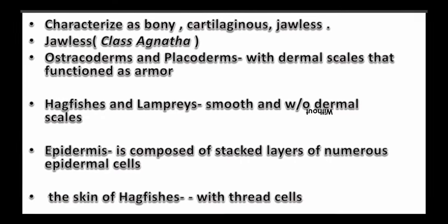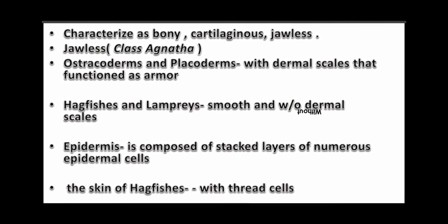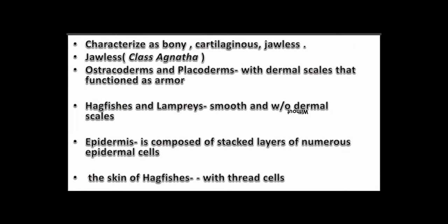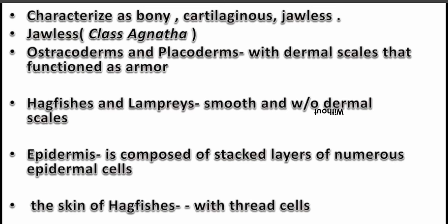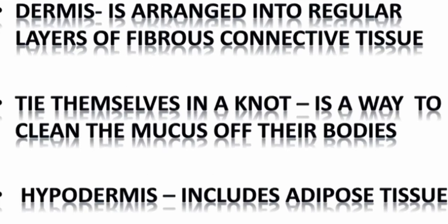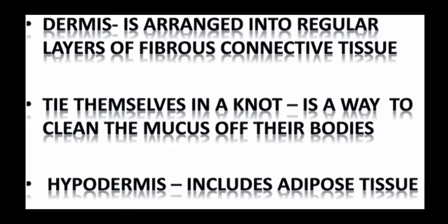The hagfishes and lampreys, which are jawless fishes, have smooth skin without dermal scales. The epidermis is composed of stacked layers of numerous epidermal cells. The skin of hagfishes is characterized by the presence of thread cells. The dermis is arranged into regular layers of fibrous connective tissue, with cells tying themselves in a knot in a way that cleans off mucus from the bodies of the fish.